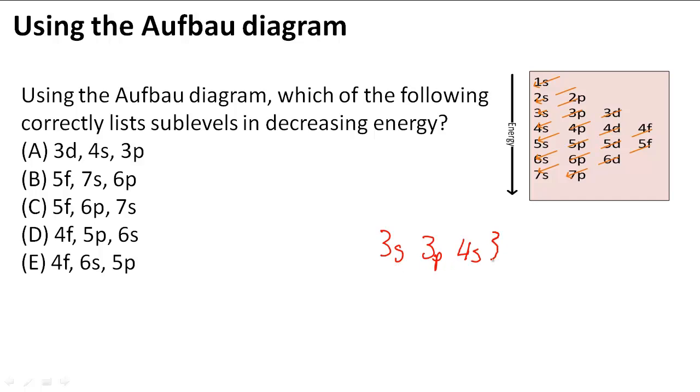And then 3d, the one that's lower energy level than 3d, is actually 4s. So if I read this, it says 1s, then 2s, then 2p, then 3s, then 3p, then 4s, then 3d.